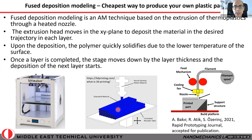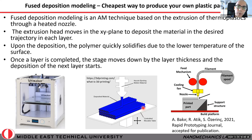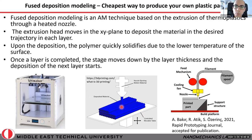The nozzle moves in the XY plane so you can print whatever shape you need within a layer. Once a layer is complete, the table moves down and the next layer is printed. When the hot polymer is deposited, it locally melts the region beneath it, generating fusion between layers. By the end of the process no additional binding or sintering is needed — the part is ready to use.